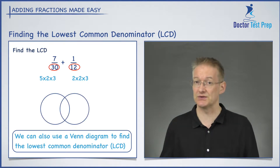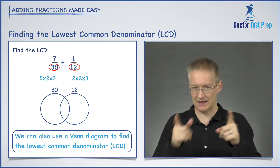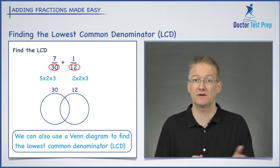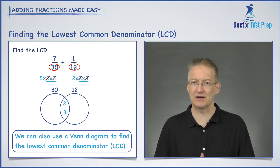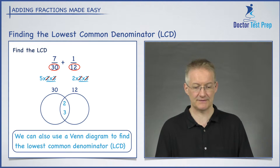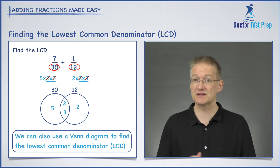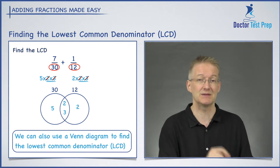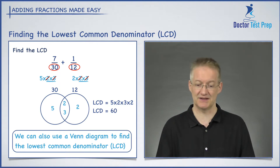Then I draw two circles — one for the 30 and one for the 12 — overlapping, because what goes in that overlapping part are any numbers that appear in both denominators. I have 2 in both of them and I have 3 in both of them, so I place the 2 and the 3 in the overlapping region. What's left? The 5 goes on the 30 side, and the remaining 2 goes on the 12 side. To find the lowest common denominator, we simply multiply everything in those two circles together: 5 times 2 times 3 times 2 gives me 60, which is my LCD.